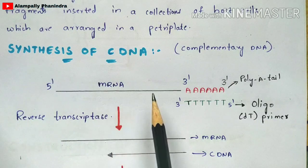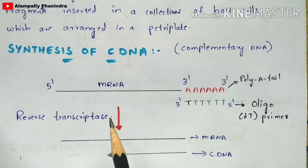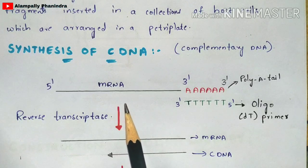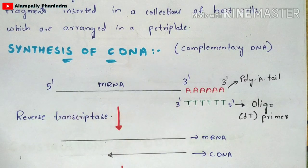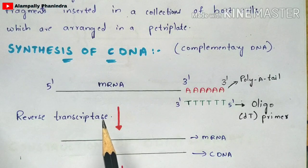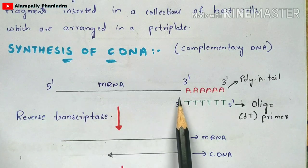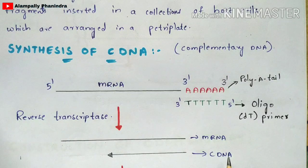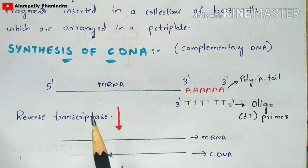Along with the oligo-dT primer, you add the reverse transcriptase enzyme to the mRNA. This reverse transcriptase enzyme moves from three prime to five prime direction — unlike normal enzymes which move from five prime to three prime. The name itself indicates 'reverse' transcriptase, as it moves from three prime to five prime. As this enzyme moves in that direction, the synthesis of cDNA — complementary DNA — occurs. This DNA strand being synthesized is complementary to the mRNA nucleotides.